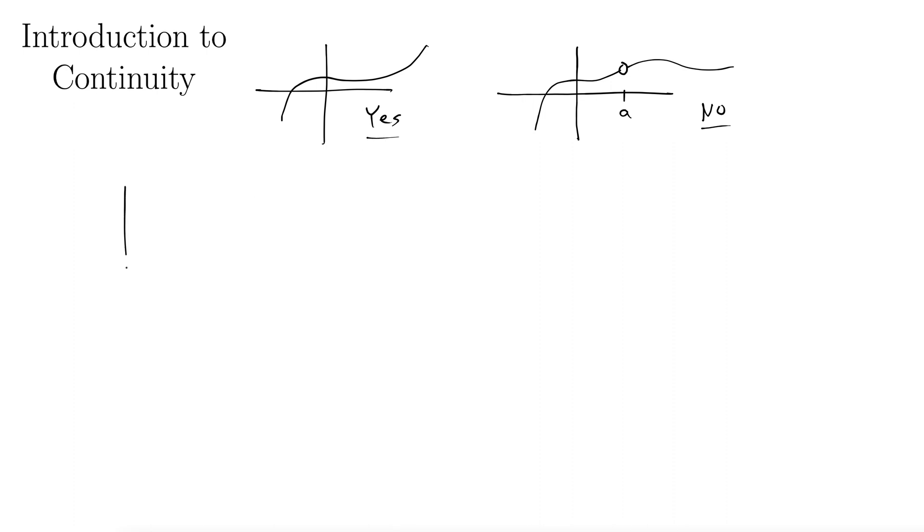Maybe you have something like a piecewise function defined everywhere, sure, but it jumps and we lose that continuity. So this one is not continuous.